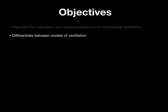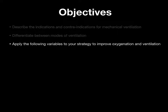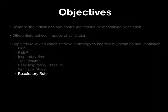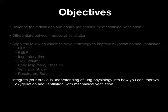Let's review the objectives. We've talked about the indications and contraindications of mechanical ventilation, and differentiated between non-invasive and invasive modes — assist control, SIMV, and CPAP/pressure support. We've discussed variables to improve oxygenation: FiO2, PEEP, and I-time; and for ventilation: tidal volume or peak inspiratory pressure — you can only control one or the other — plus respiratory rate, which determines minute ventilation. We've combined these variables and integrated them with the foundational knowledge of VQ matching and minute ventilation.